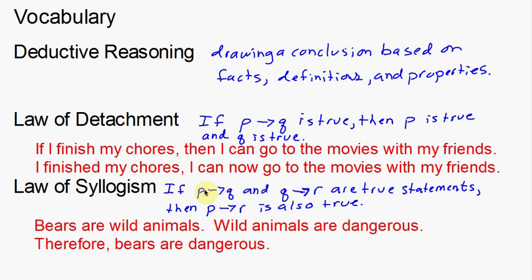See how we used the very first part — bears — and then the very last part — dangerous — and brought them together saying bears are dangerous. So that's a very simple example of the law of syllogism. That was a vocabulary review over deductive reasoning, law of detachment, and the law of syllogism.